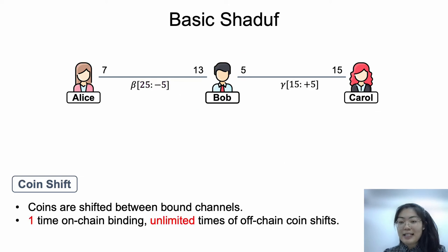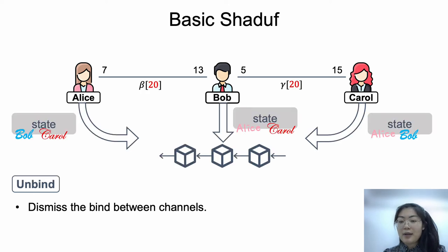It should be noted that the on-chain binding is required only once, and the off-chain coin shifts between the bound channels could be performed unlimited times. Corresponding to the binding procedure, users could further request to unbind the two channels. The two channels' on-chain capacities are updated according to the latest coin shift state. After that, they could be bound to other channels.